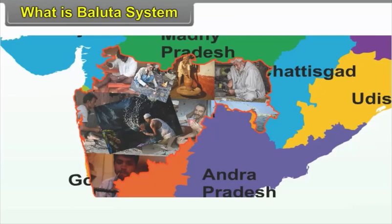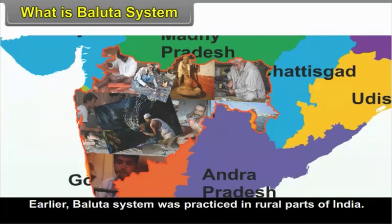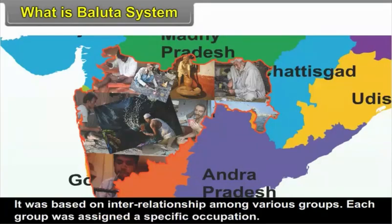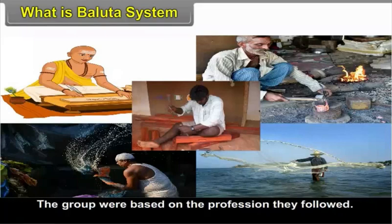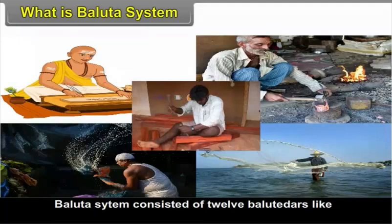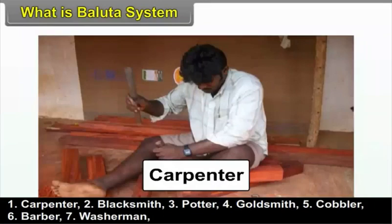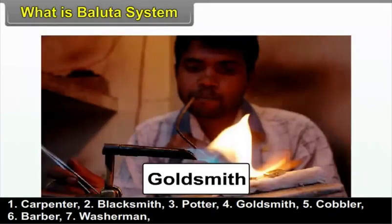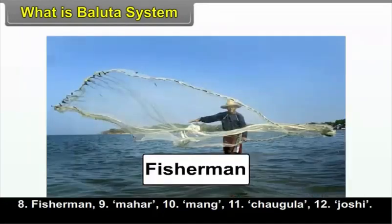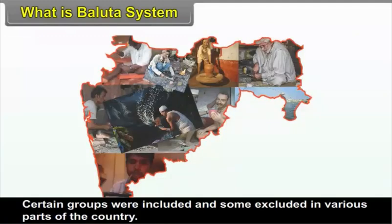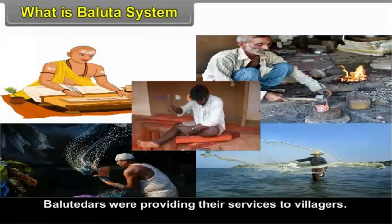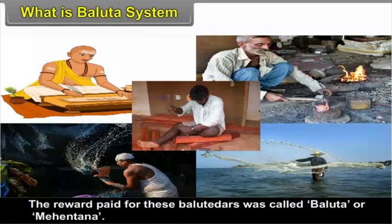3.4 What is the Baluta System? Earlier, the Baluta system was practiced in rural parts of India. It was based on interrelationship among various groups, and each group was assigned a specific occupation based on the profession they followed. The Baluta system consisted of 12 Balutedars: Carpenter, Blacksmith, Potter, Goldsmith, Cobbler, Barber, Washerman, Fisherman, Mahar, Mang, Chaugula, and Roshi. These groups were not uniformly followed all over India; certain groups were included and some excluded in various parts of the country.